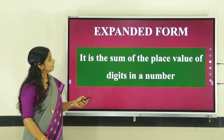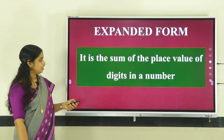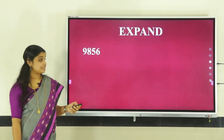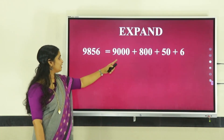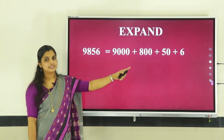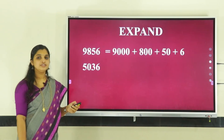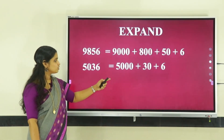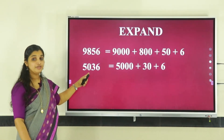Next is expanded form. Expanded form is the sum of the place values of all digits in a number. Let us expand nine thousand eight hundred and fifty-six: nine thousand plus eight hundred plus fifty plus six. Now for five thousand thirty-six: five thousand plus thirty plus six. Here the hundreds place has zero, so we omit that zero.